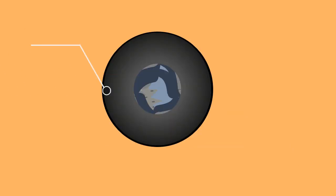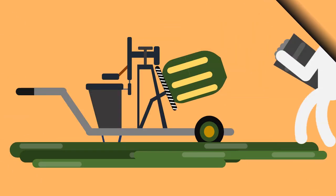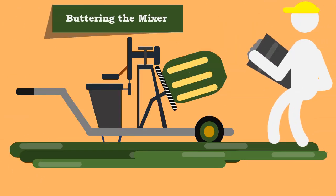The main disadvantage of this mixer is that some mortar adheres to the drum walls after discharging concrete. To overcome this, buttering the mixer is done before the first batch of concrete.